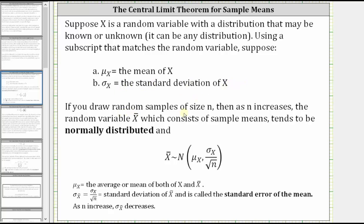If you draw random samples of size n, as n increases, the random variable x-bar, which consists of sample means, tends to be normally distributed — indicated using this notation here — where the mean of x-bar is mu sub x, and the standard deviation of x-bar is equal to the standard deviation of x divided by the square root of n.